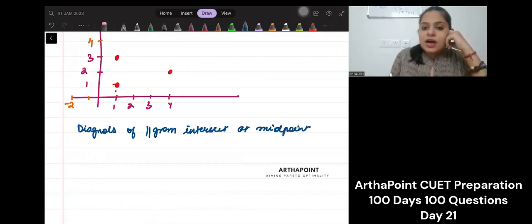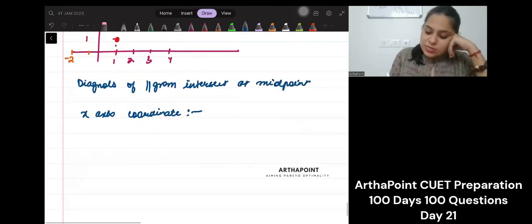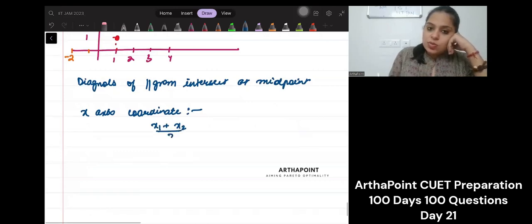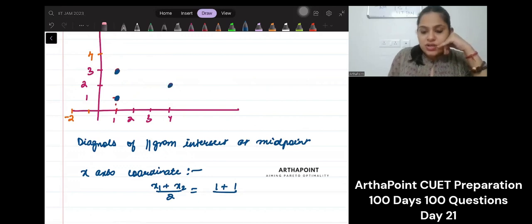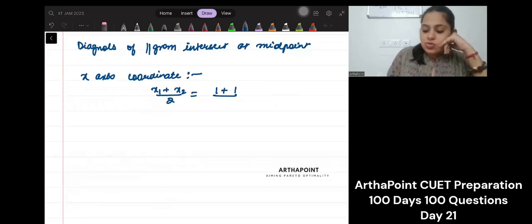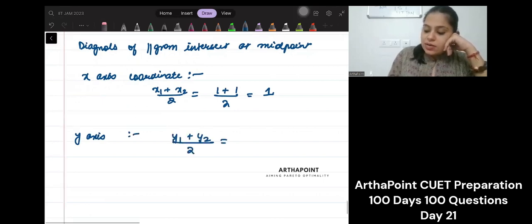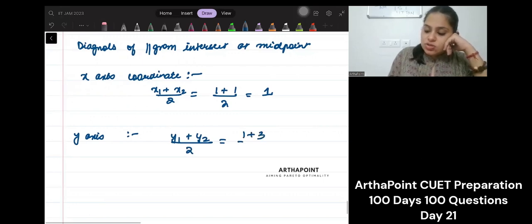So, if I were to have my x-axis coordinate, it would be x1 plus x2 by 2, which will be 1 plus 1. These are the two. This is (1,1). This is (1,3). This is (4,2), right? So, what we're going to do is, the coordinate of the x-axis will be x1 plus x2 by 2. So, 1 plus 1 by 2 will give you 1. And the coordinate of y-axis is going to be y1 plus y2 by 2. So, it will be 1 plus 3 by 2. So, this will be 2.